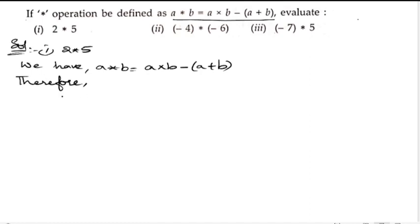Therefore, now let us substitute: in place of a, 2, and in place of b, 5. So 2 star 5 equals 2 into 5 minus (2 plus 5).